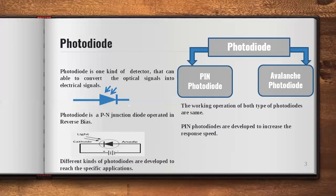For your application, if response speed plays a major role, we will use the PIN photodiode. If sensitivity is the requirement — that is, where we have to detect weak signals — then in that particular application we use the avalanche photodiode.